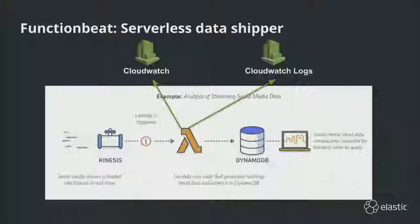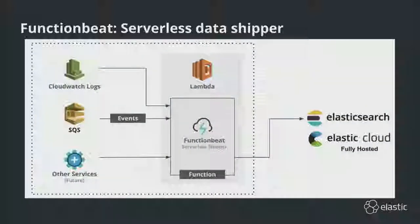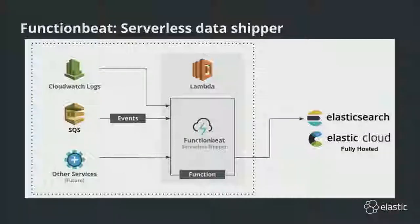Last but not least, I wanted to talk about Functionbeat. For those who have moved to a more serverless architecture, deploying Filebeat and Metricbeat may not make sense because you aren't renting infrastructure. Your applications may be composed of turnkey services with code running in something like Amazon Lambda — and metrics and logs may be shipped to services like CloudWatch. Functionbeat itself runs within a Lambda, can be triggered by an event from a CloudWatch log group, and collects metrics and logs from various services to forward them to Elastic Cloud or your own Elasticsearch.